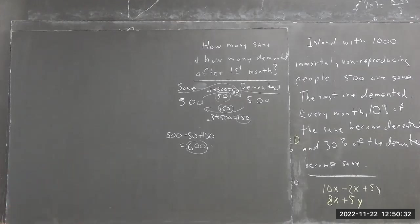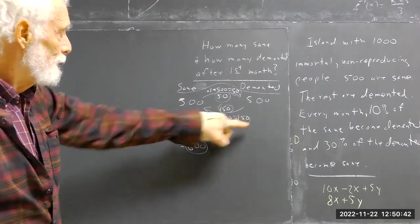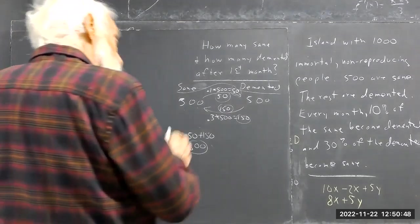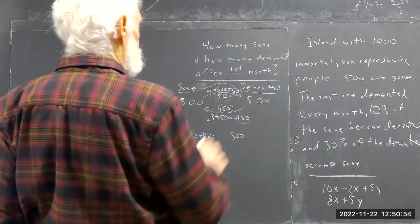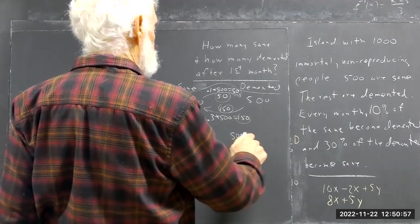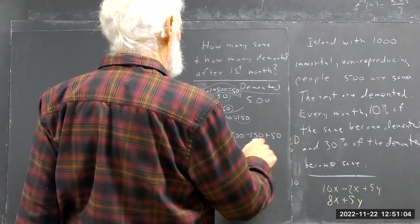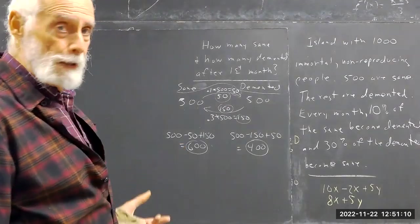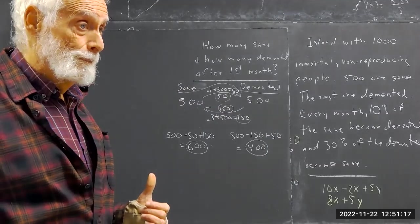Most people got that. There were 500 sane, not 1000 — you multiply by 0.3 because that's how you do 30%. In the demented category, you have 500, you're losing 150 and gaining 50, so that gives you 400. Basically, there's a net of 100 going one way and 100 going the other.